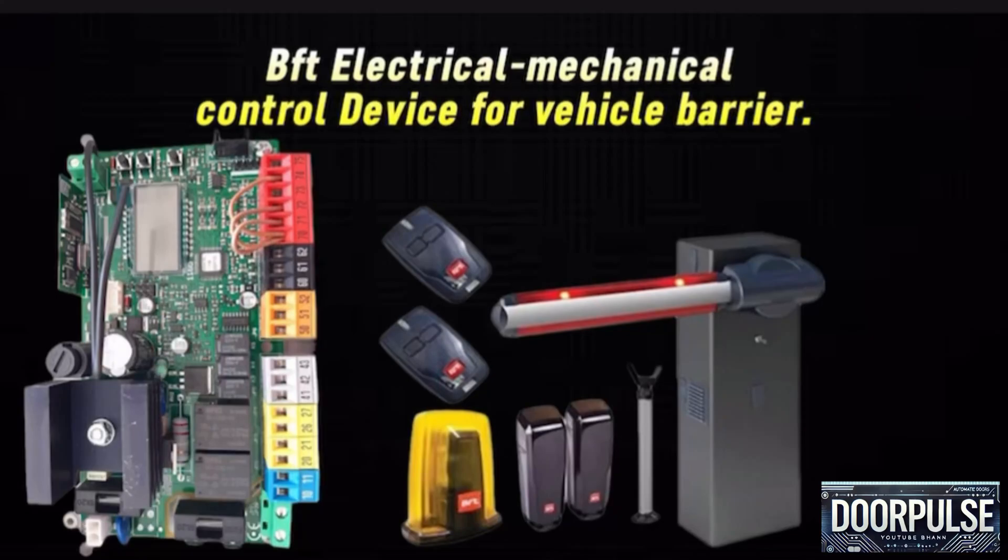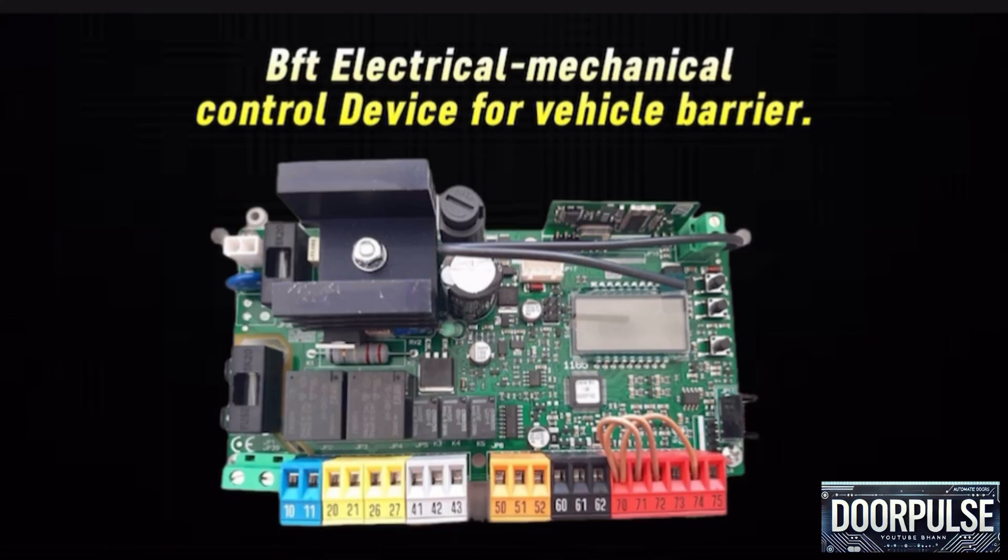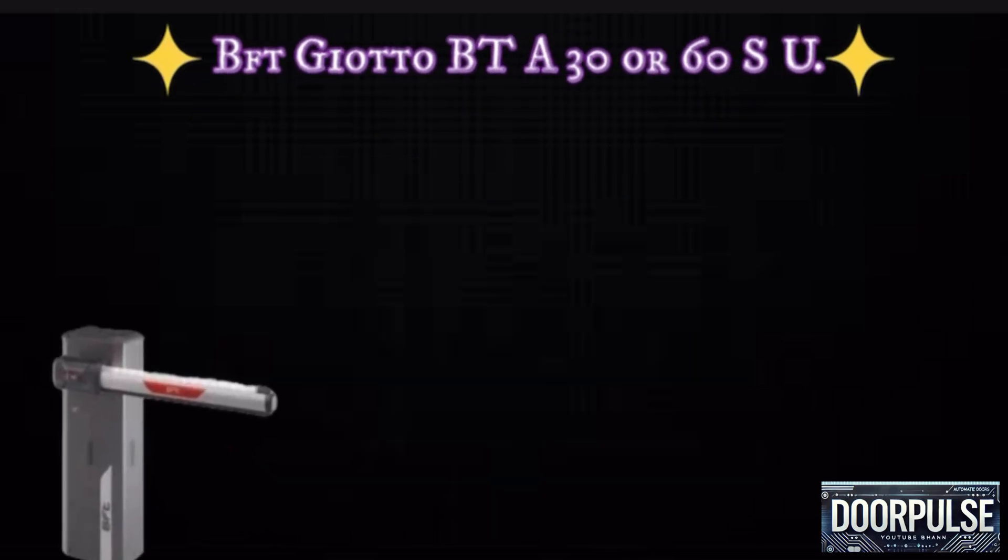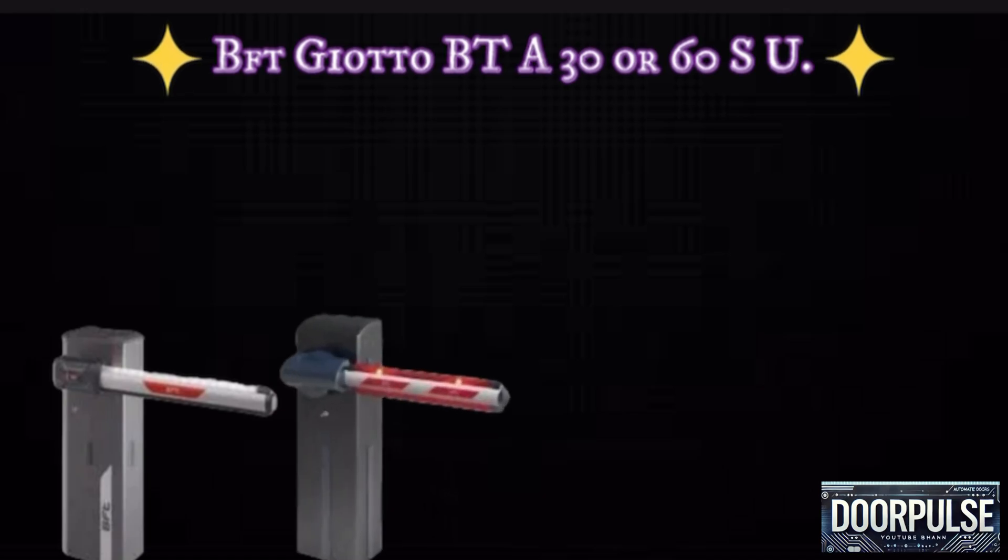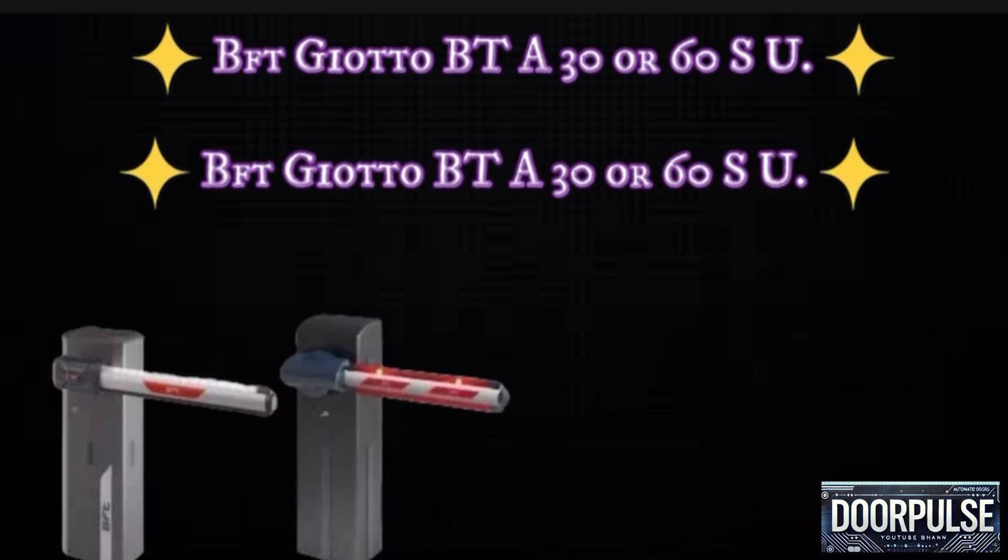BFT electrical mechanical control device for vehicle barrier. Here we will explain wiring connections of the control board. There are different models: 1. BFT Jotto BT A30 or 60S, 2. BFT Jotto BT A30 or 60SU. Let's start.